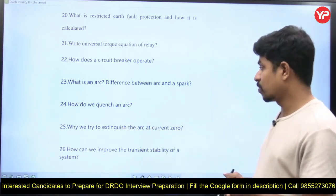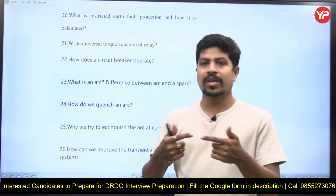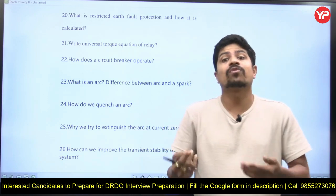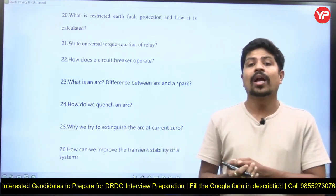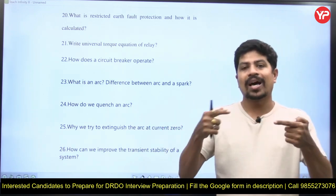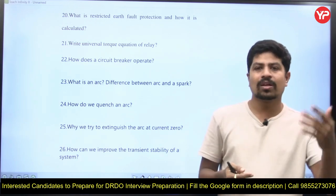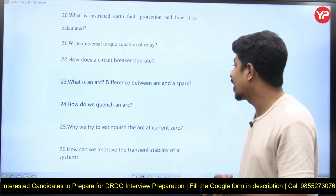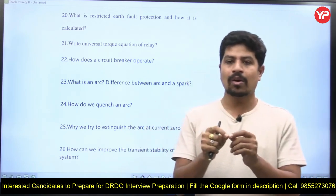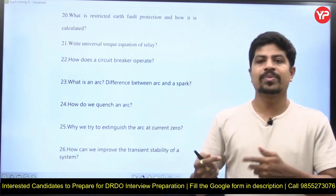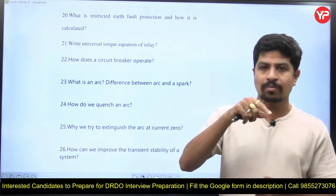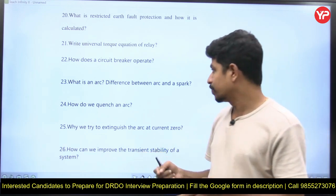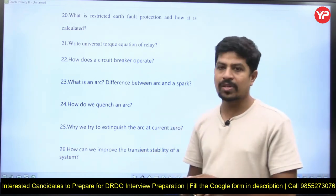How does a circuit breaker operate? When circuit breaker contacts open, an arc forms. Questions can be asked on: what is the arc, why it is formed, and why the arc continues after the contacts open. Also: what is the difference between a spark and an arc? A spark appears briefly and disappears on its own, whereas an arc in a circuit breaker continues until you quench or extinguish it.